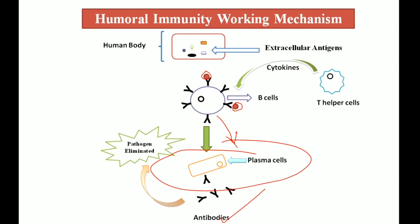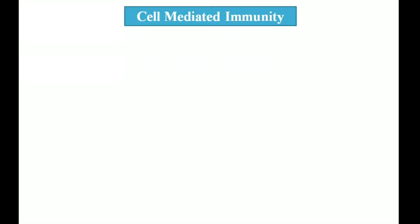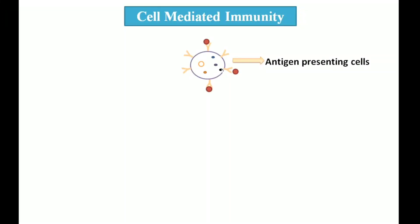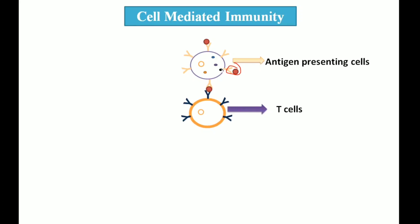Now let's look at cell-mediated immunity. Here, intracellular pathogens are displayed by antigen-presenting cells. Antigen-presenting cells — such as macrophages or dendritic cells — display these pathogens or antigens. In the first step, T cells bind to the antigen-presenting cell complex on the surface of the infected cell.